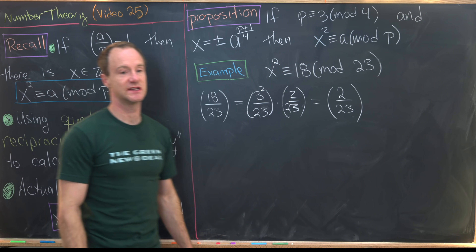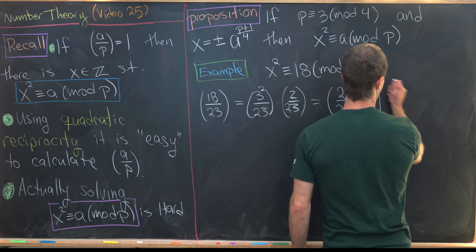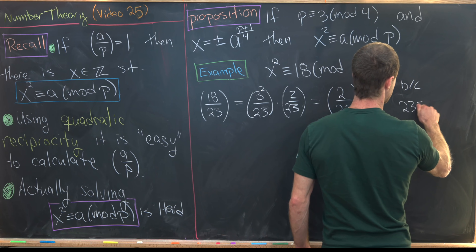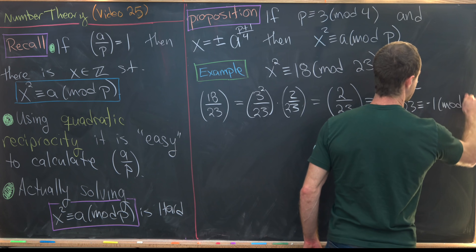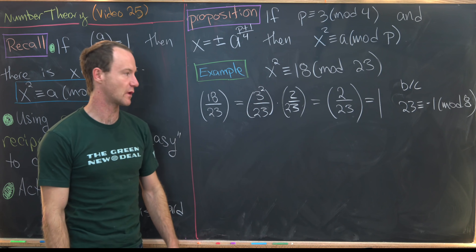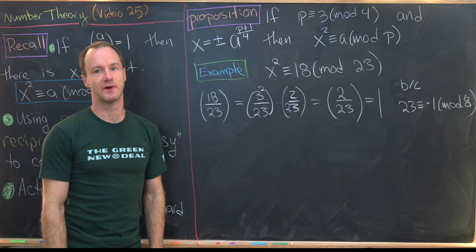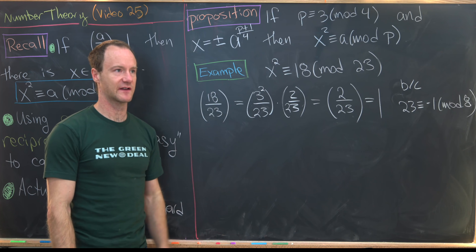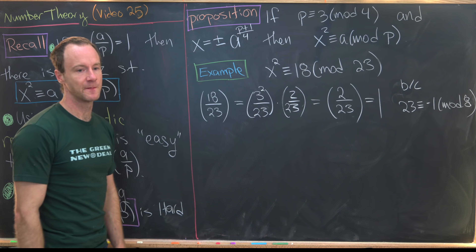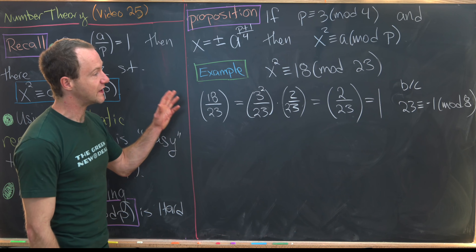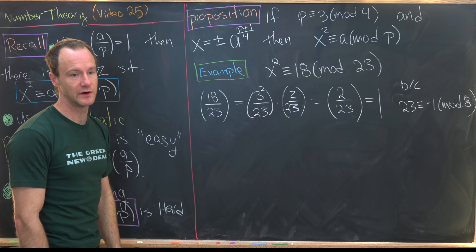Now (2/23) is equal to 1 because 23 ≡ −1 mod 8. Recall that 2 is a perfect square mod p if and only if p ≡ ±1 mod 8. So now we know there's a solution. Let's build it using the proposition.